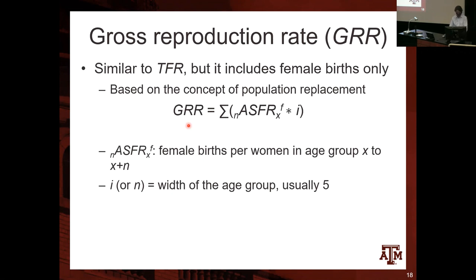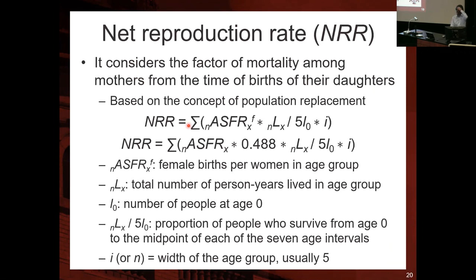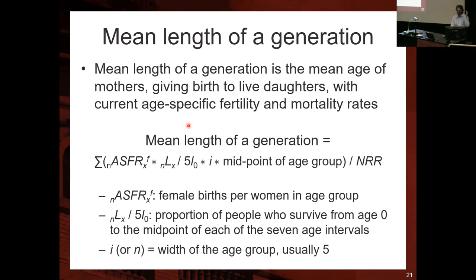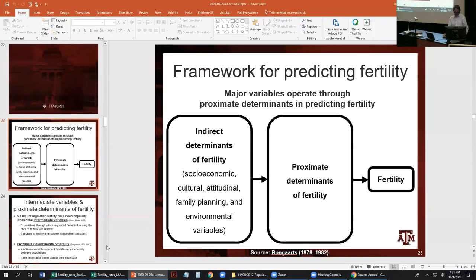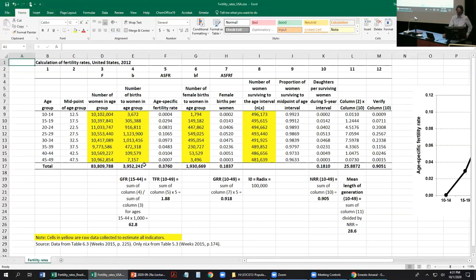We are out of time. In the next class I will continue with the net reproduction rate and the mean length of a generation, and then I'll show you examples using the Excel spreadsheet for the US and Brazil to estimate each one of these rates with real data.